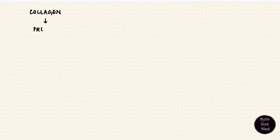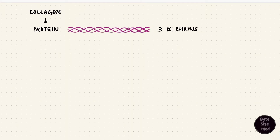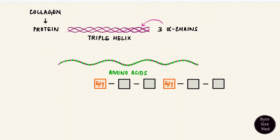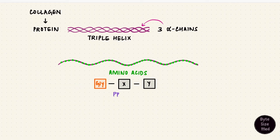Collagen is a protein, so it's got polypeptide chains. There are three alpha chains that form a triple helix — collagen thus has a triple helical structure. Each chain has amino acids forming a unique triple repeating sequence: glycine, X, and Y on repeat. X and Y could be any amino acid, but the two amino acids that usually appear in collagen are proline and lysine.